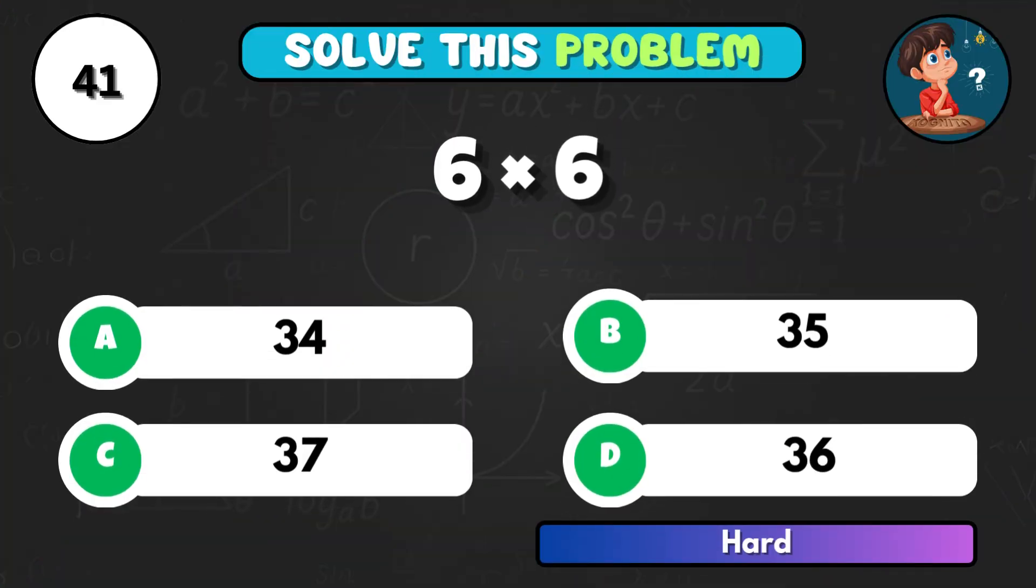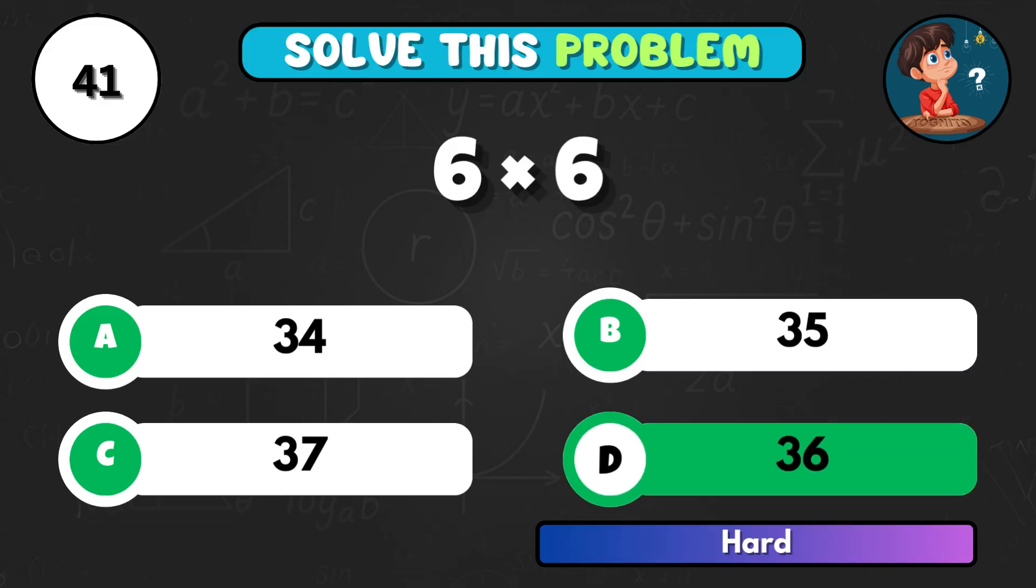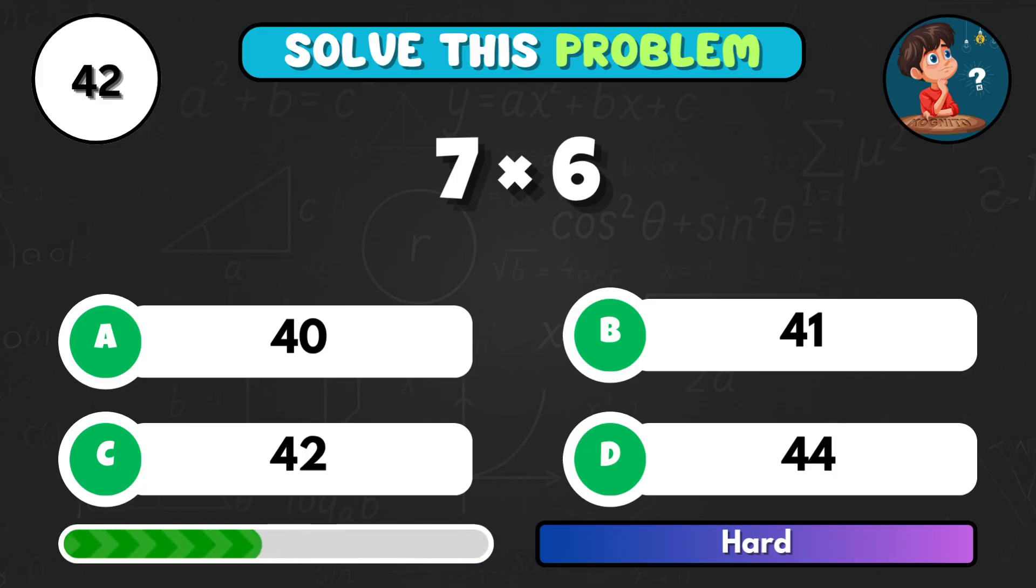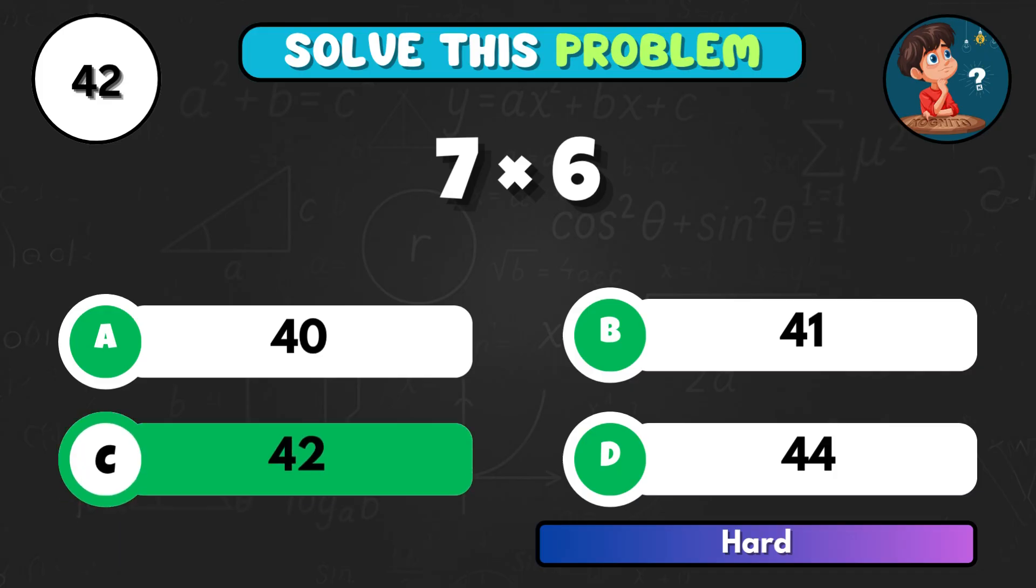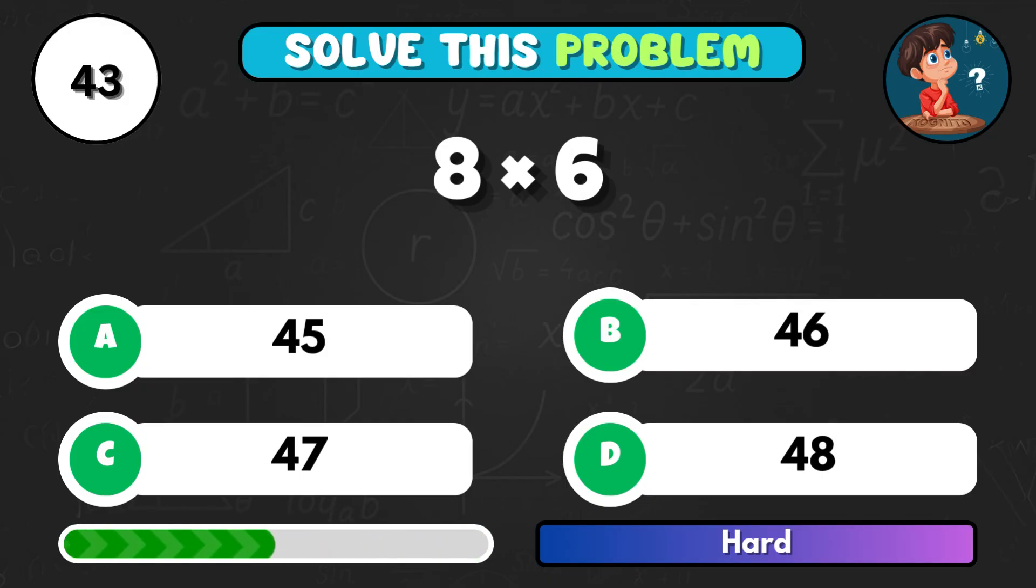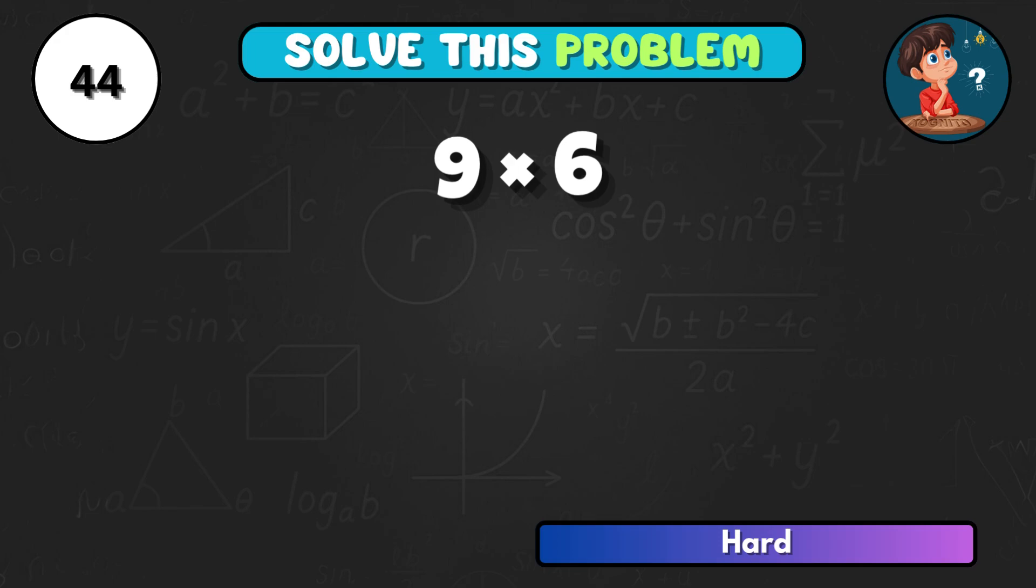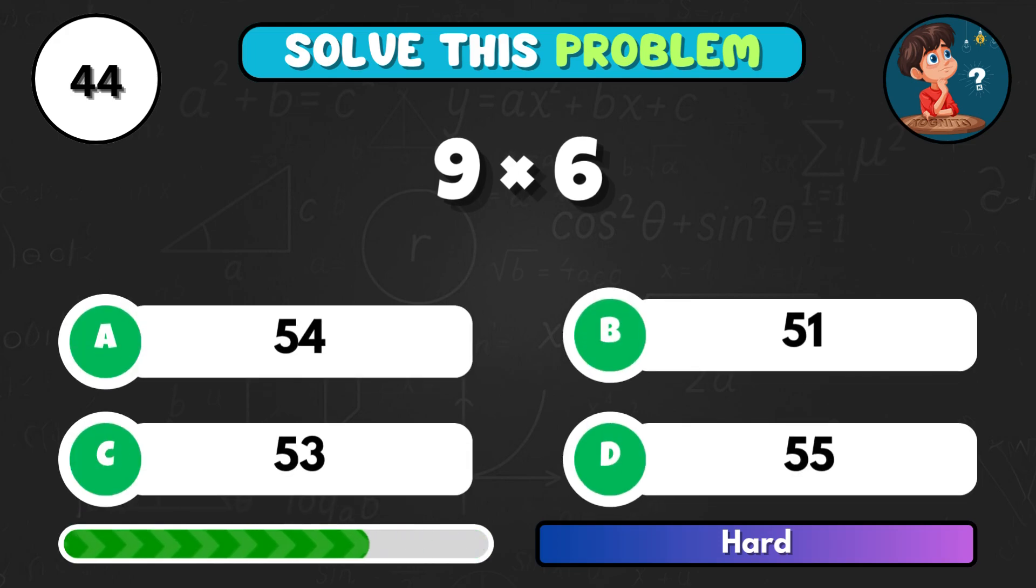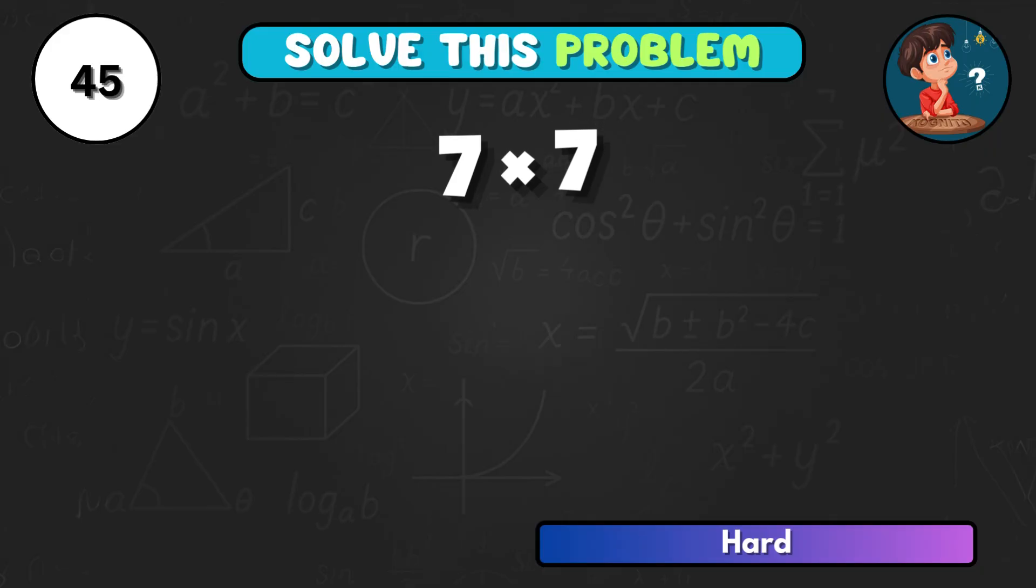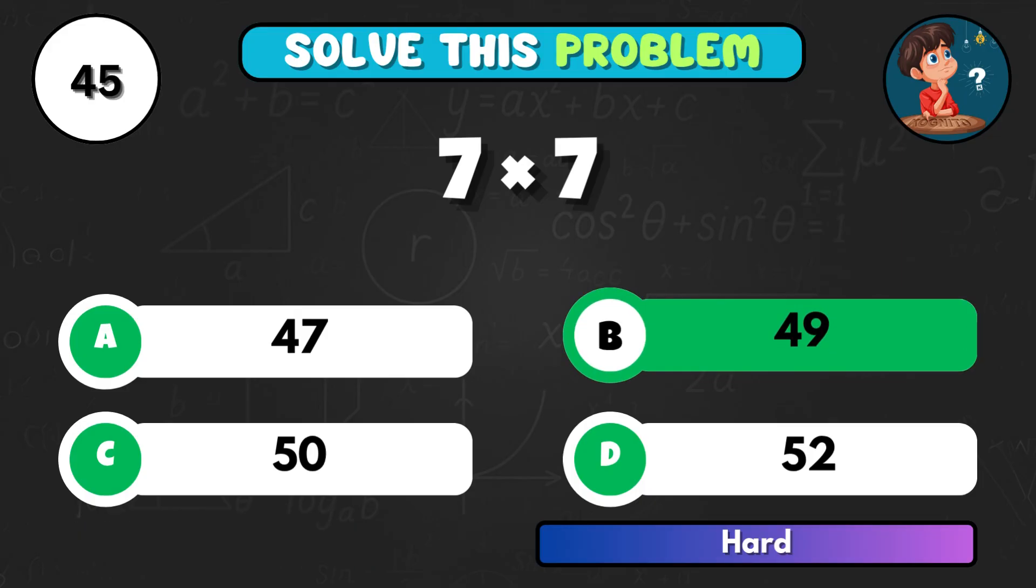6 times 6, think fast. That's D, and the answer is 36. 7 times 6, what's your result? Option C, total 42. 8 multiplied by 6, what do you get? Correct choice D equals 48. 9 times 6, what's your final number? That's A, total 54. 7 times 7, can you recall that one? Correct letter B equals 49.